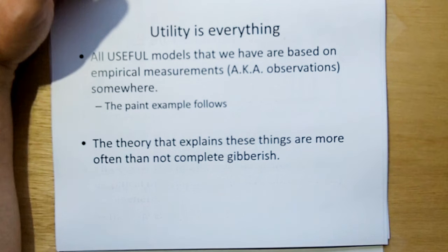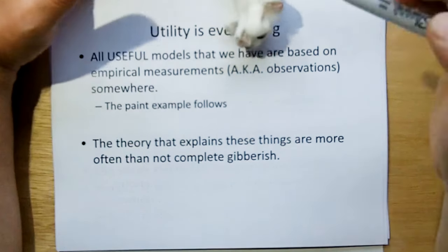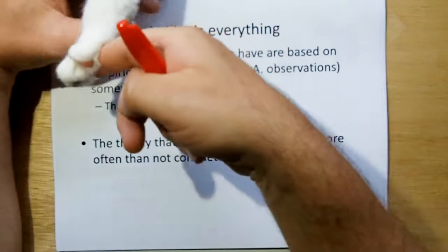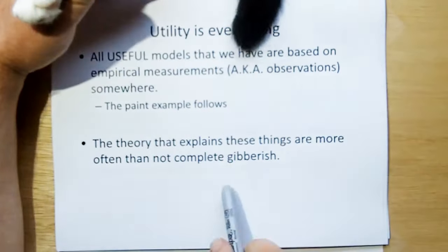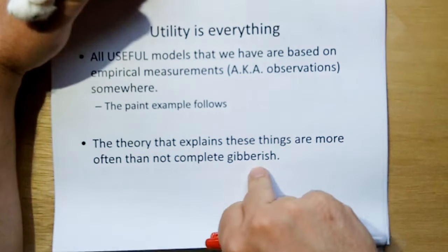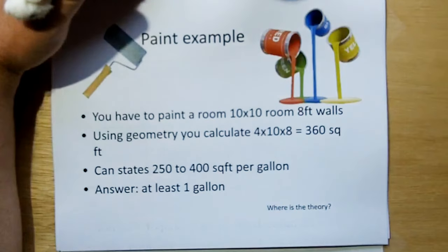So utilities are everywhere. All useful models. And one thing that we have to drive home here is that all useful models that we have are based on empirical measurements, a.k.a. observations, somewhere along the way. And the paint example follows. And a theory that explains these things are more often than not gibberish. Let me use the paint example.